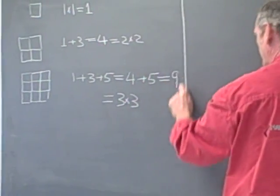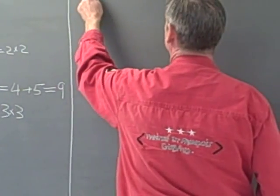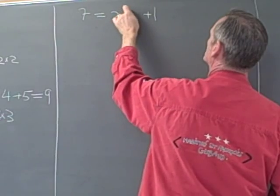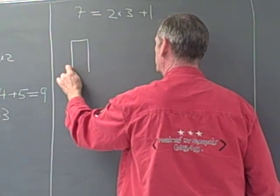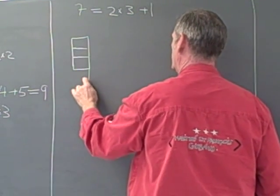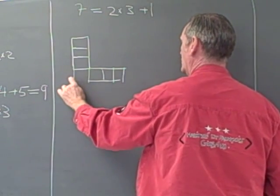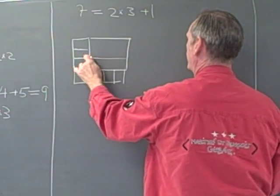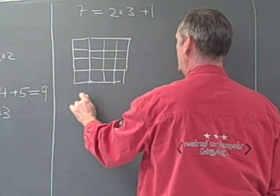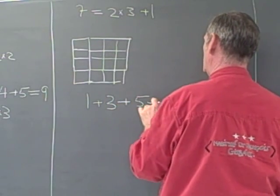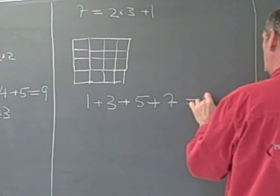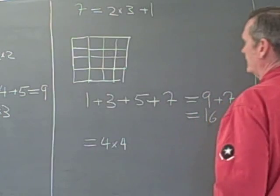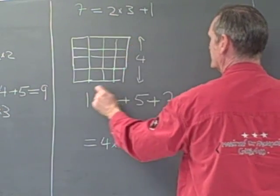Let's continue — we're going to look at seven. Seven is an odd number, so it's going to be one more than an even number, and an even number would be two times a number, so it's one more than two times three. We're going to take two bits of size three and add on one. So this L shape has seven squares in it, and then if I add on what I had before — four — I get one plus three plus five plus seven is equal to nine plus seven, so that's equal to 16. And that's the same thing as four times four: four units this way and four units this way.